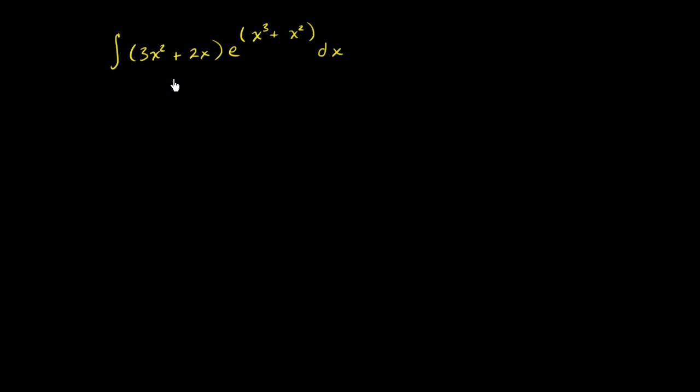So first, when you look at it, it seems like a really complicated integral. We have this polynomial right over here being multiplied by this exponential expression. And over here in the exponent, we essentially have another polynomial. It seems kind of crazy.